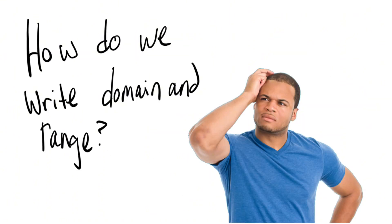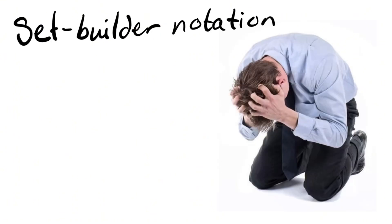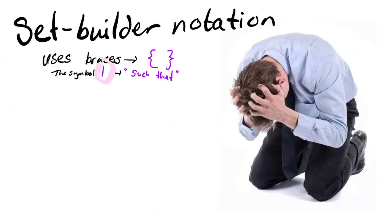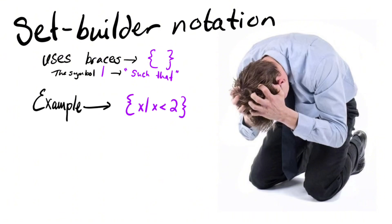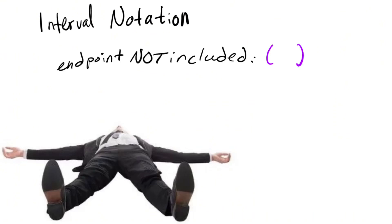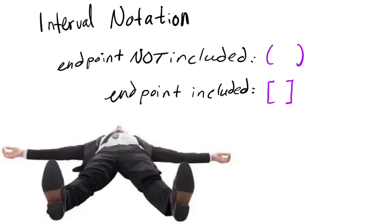So, how do we write domain and range? Set builder notation uses the squiggly braces. This symbol is read as 'such that.' For example, this is read as 'x such that x is less than 2.' Interval notation: if the endpoint is not included, use parentheses. If the endpoint is included, use brackets. Always use parentheses for infinity and negative infinity.